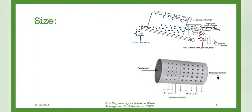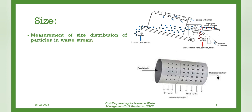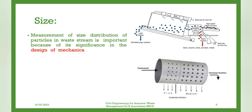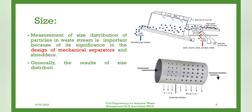Size. Measurement of size distribution of particles in the waste stream is important because of its significance in the design of mechanical separators and shredders. Generally, the results of size distribution analysis are expressed in the manner used for soil particle analysis.